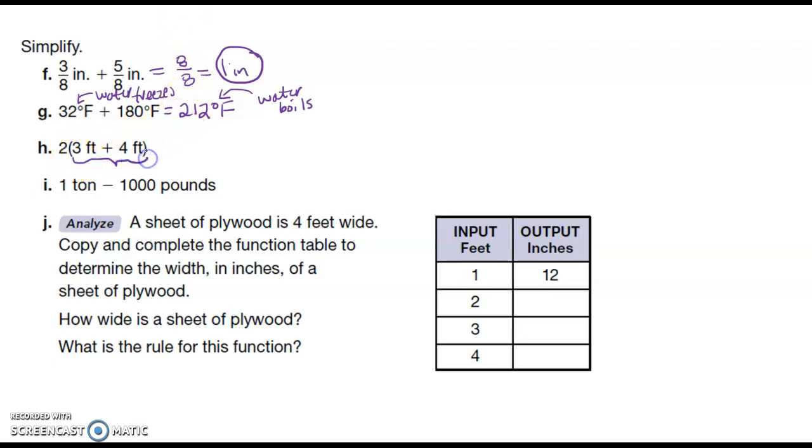We're going to go ahead and do the parentheses first. So I'm going to leave the two hanging out there. And I have three feet plus four feet is equal to seven feet, which is going to give me 14 feet.